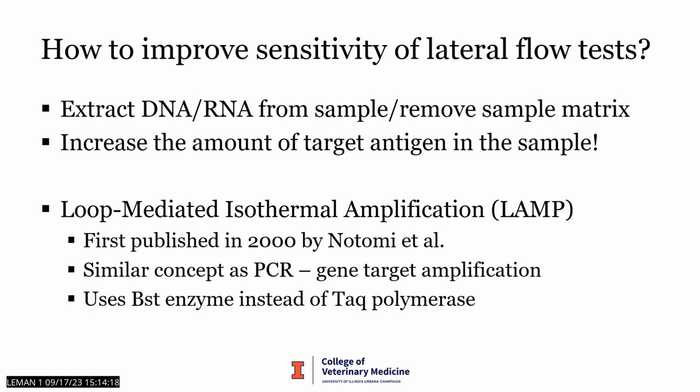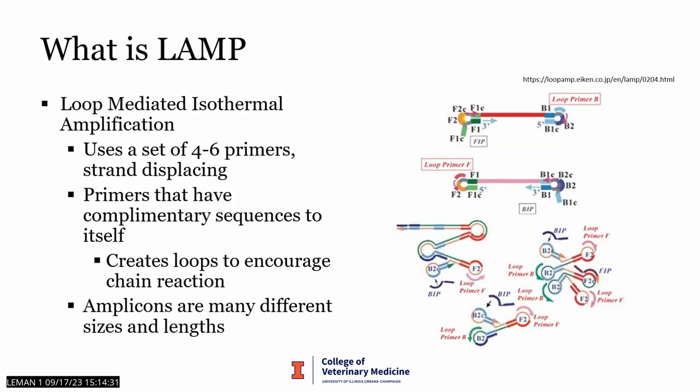I chose both methods. The amplification method I chose was loop-mediated isothermal amplification, or LAMP. First published in 2000 by Notomi et al., LAMP uses the BST enzyme instead of Taq polymerase. LAMP uses a set of four or more primers and because the reaction is isothermal with no denaturation step, the primers need to be strand-displacing. Some primers have a complementary sequence to themselves, creating a loop after binding and elongating, exposing more annealing sites and encouraging a chain reaction. The amplicons can be in a variety of lengths and shapes, looking like a smear or ladder on a traditional gel.